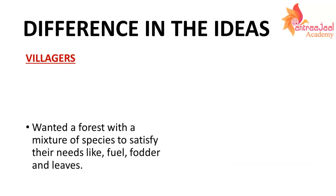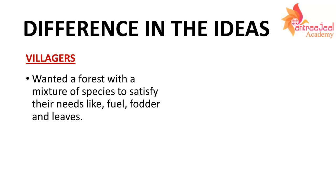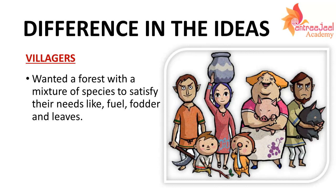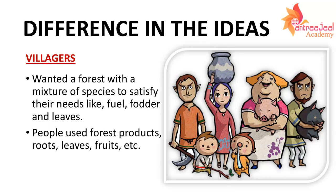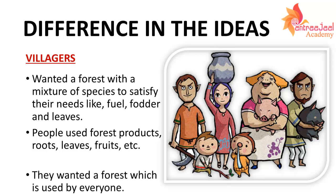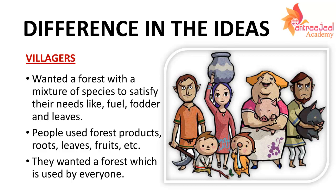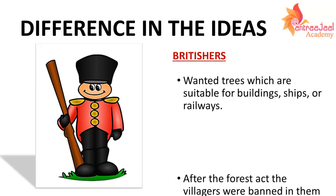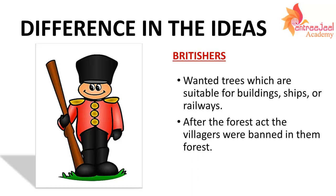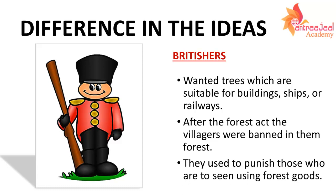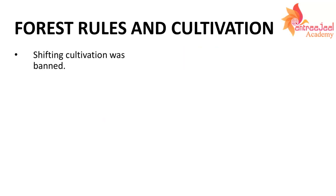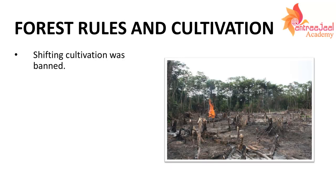Villagers and Britishers had very different views about forests. Villagers believed that a good forest is one where all living creatures live together and support each other, and they wanted forests to be accessible to everyone. Britishers, on the other hand, wanted trees that would be productive — for example, trees that could be used for building houses. Due to this, villagers were banned from entering forests. Anyone found in reserved or protected forests would be punished. The Forest Act also had a major effect on cultivation — shifting cultivation was banned.